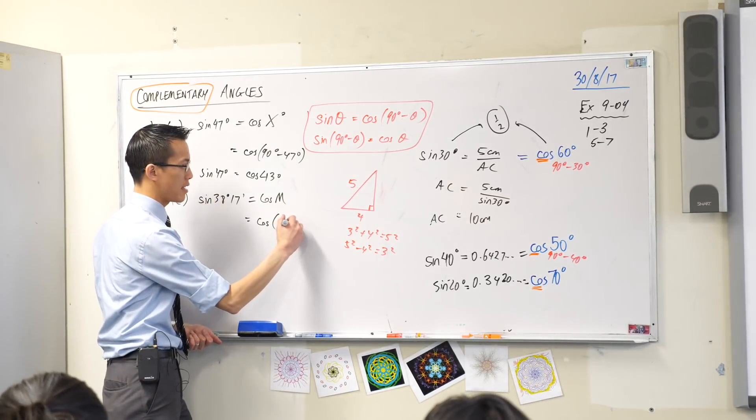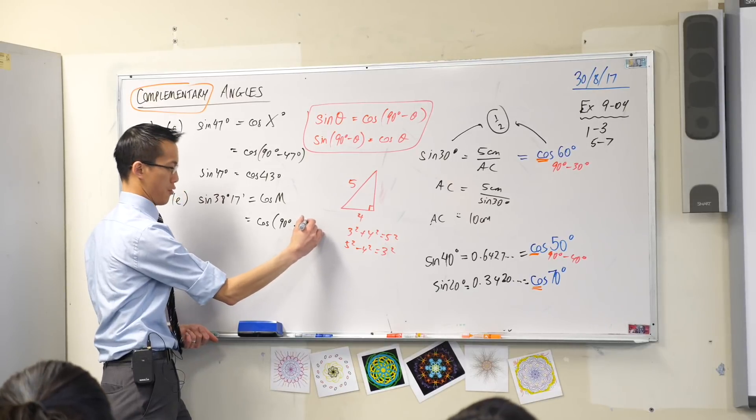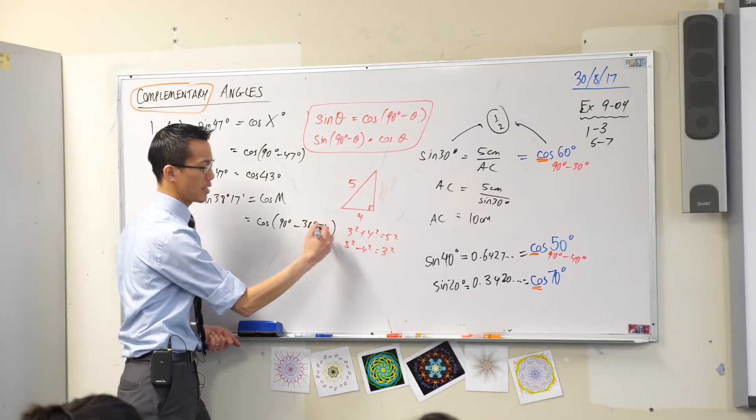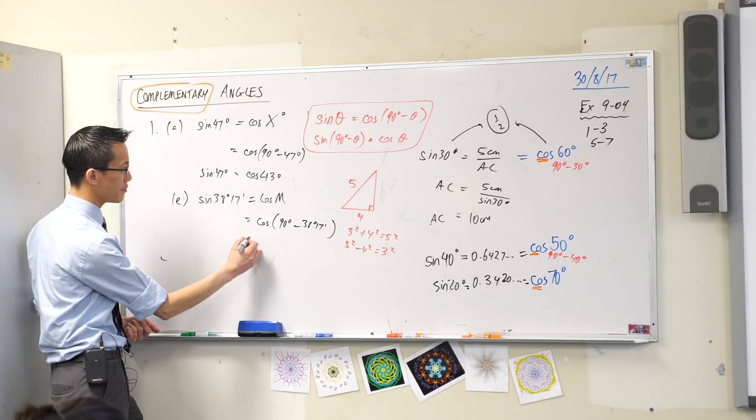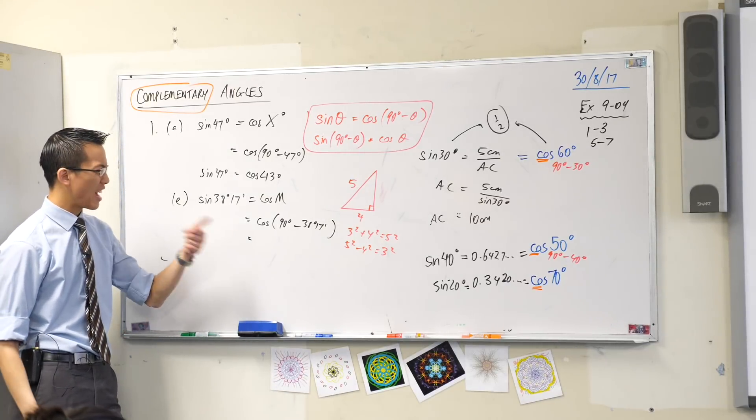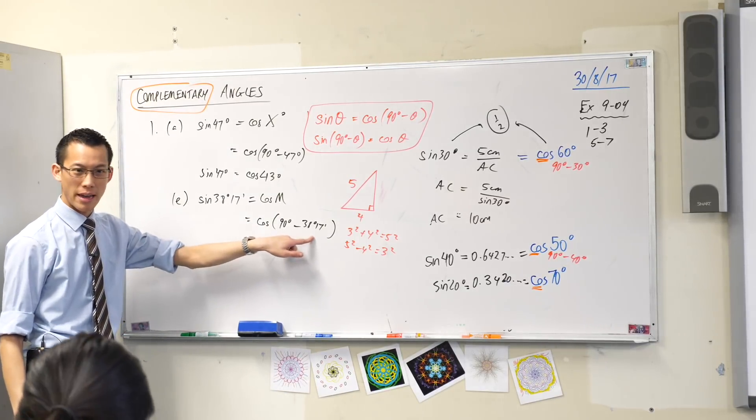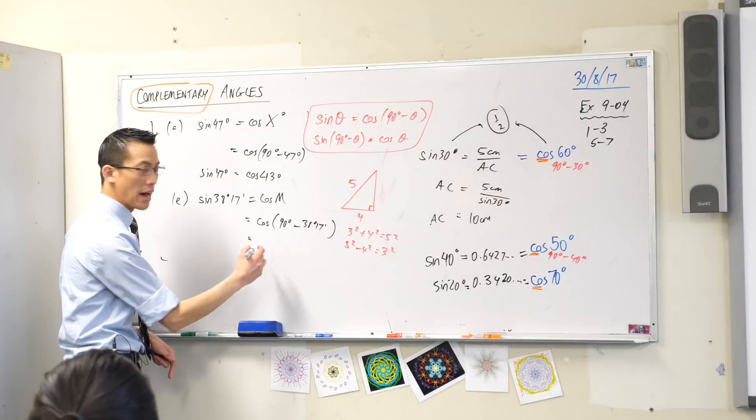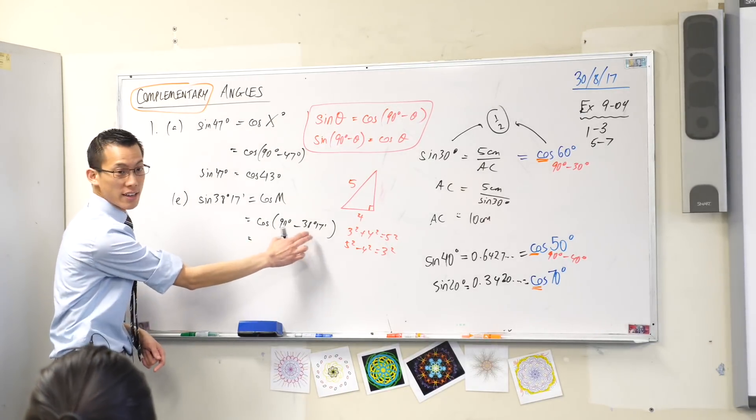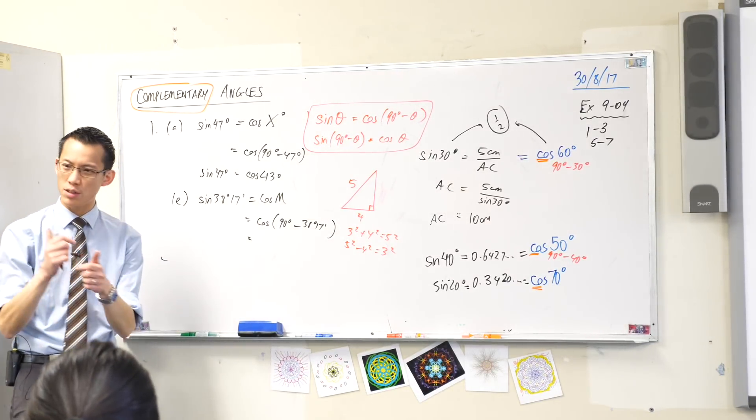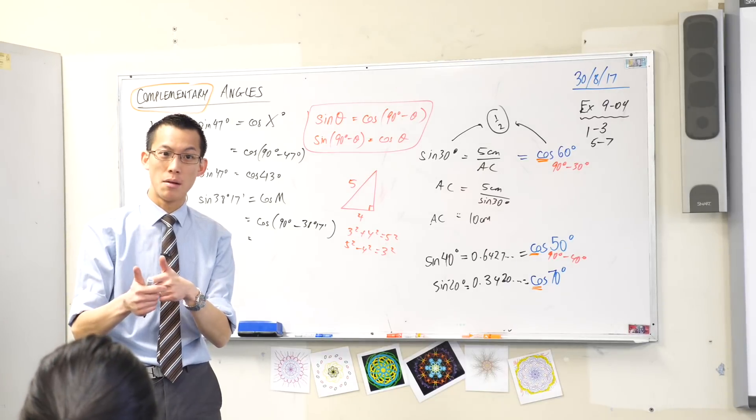So it should be 90 degrees minus 38 and 17, like so. So therefore I can say, I could work this out in my head, we will in a second, but you can confirm that because on your calculator, to input this you just have to use the degrees, minutes, seconds button more than once.